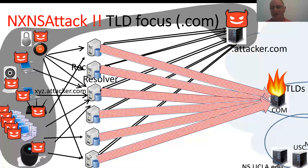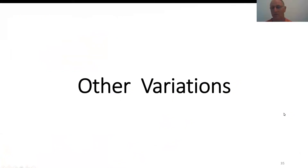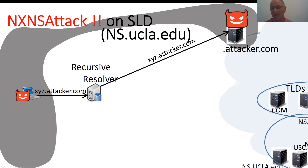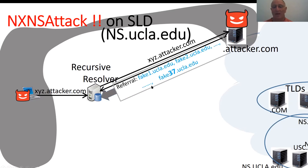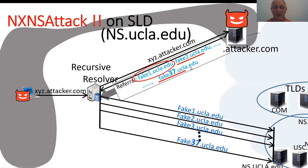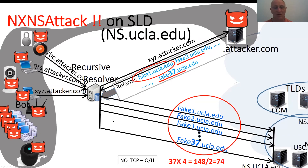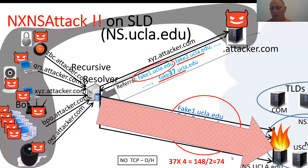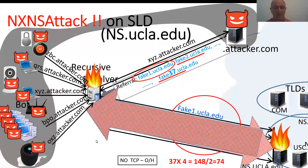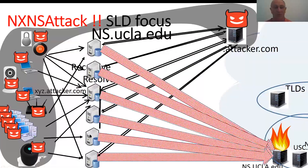Other versions: you may attack any second-level domain of your choice. In this case we are targeting the name server at ucla.edu. The attacker issues a referral response with 37 fake names, all at ucla.edu, and the resolver resolves all of them at once — actually twice as many, 74 of them. The resulting amplification factor is 74, with no TCP overhead. Again, with an extremely large botnet, you get an extremely powerful attack on any second-level domain of your choice, and the recursive resolver is swamped. You may divide the work across multiple recursive resolvers, or concentrate the attack on one recursive resolver with multiple authoritative servers.